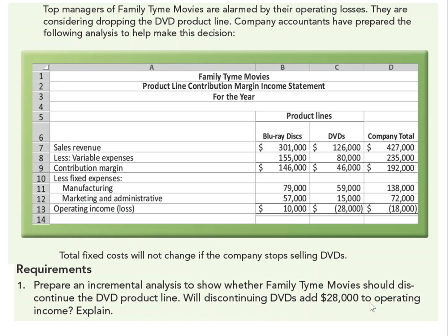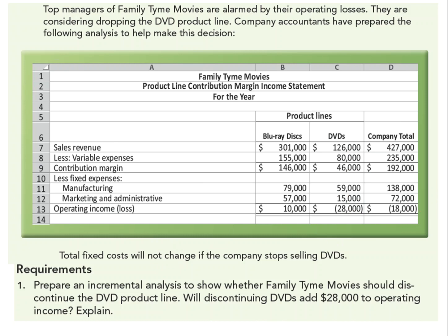Will discontinuing DVDs add $28,000 to operating income? The question is asking because if we eliminate this line and get rid of the $28,000 loss, you would think our total company income would go up by $28,000 and we'd be in the black. The problem is that when we eliminate the DVD line, we get rid of the revenue and the contribution margin, but we do not get rid of the $74,000 in fixed expenses, because total fixed costs will not change. Those fixed costs now need to be absorbed by the Blu-ray disc line, so this is definitely a no.